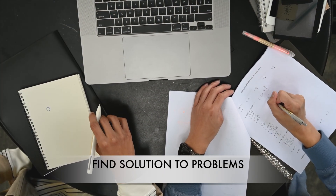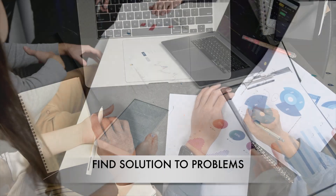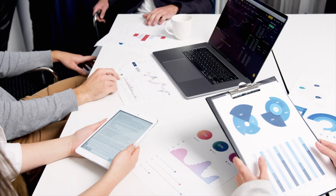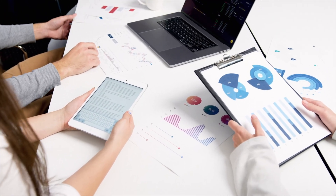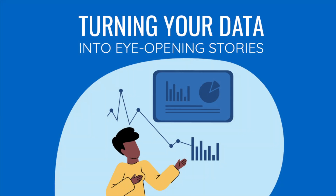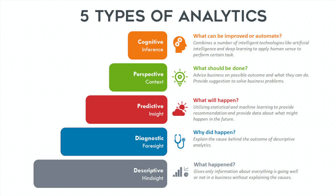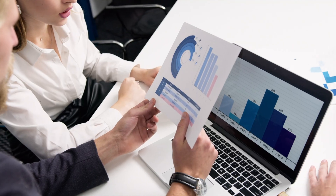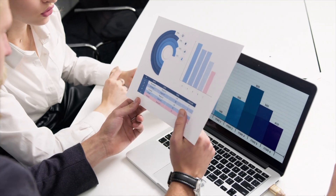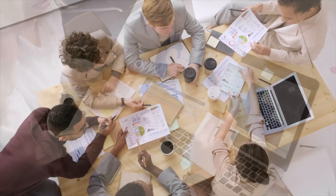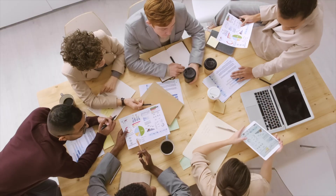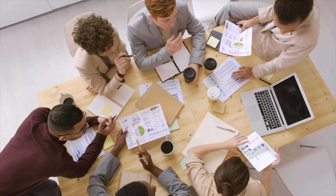The second reason is to find solutions to problems. Data allows organizations to more efficiently determine the cause of a problem. It allows them to visualize the relationship between what is happening, why it is happening, and what will happen in the future — which helps them predict the future based on historic data and take preventive measures so that certain things don't happen again.